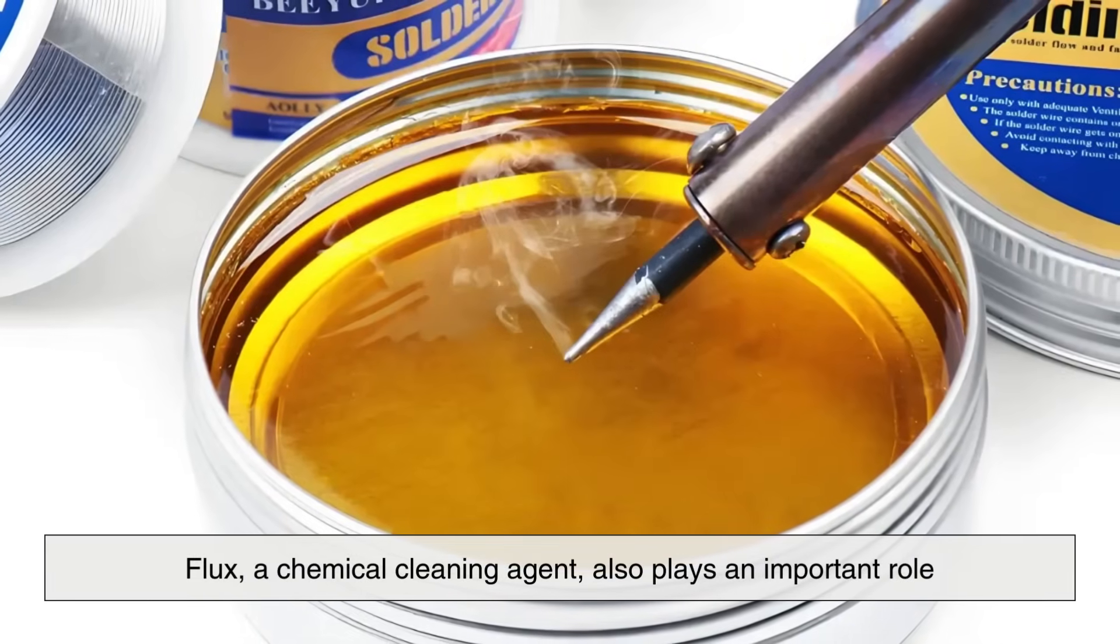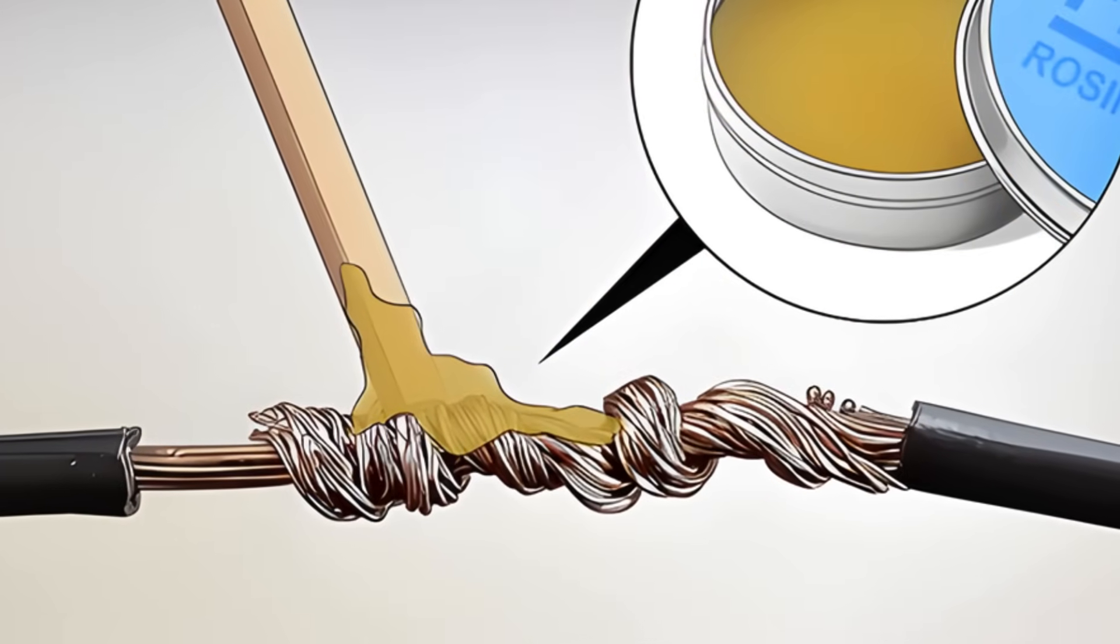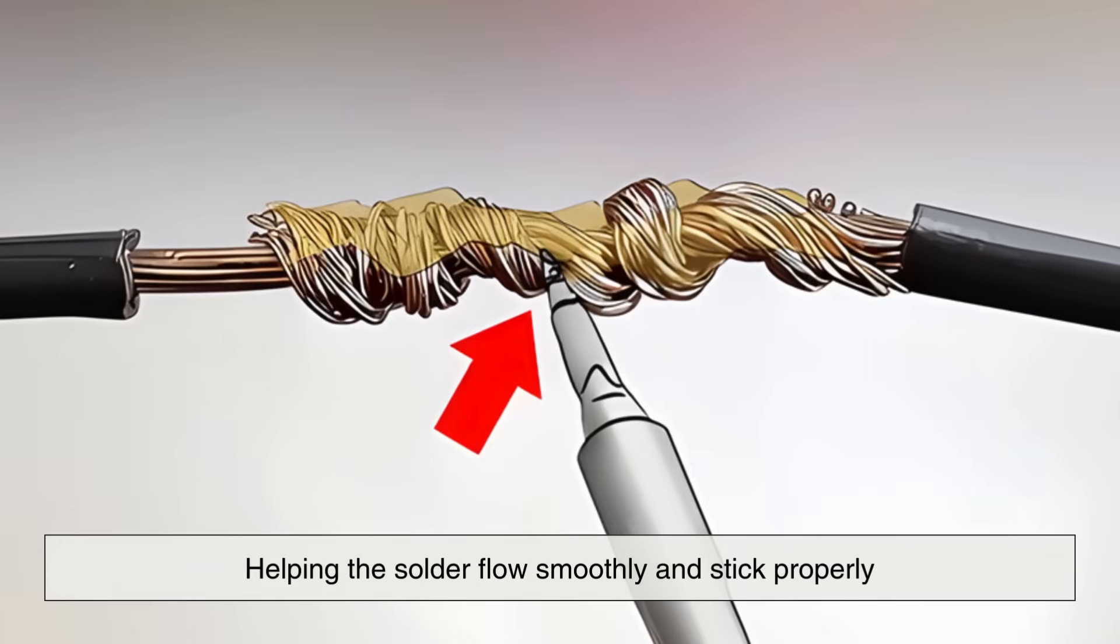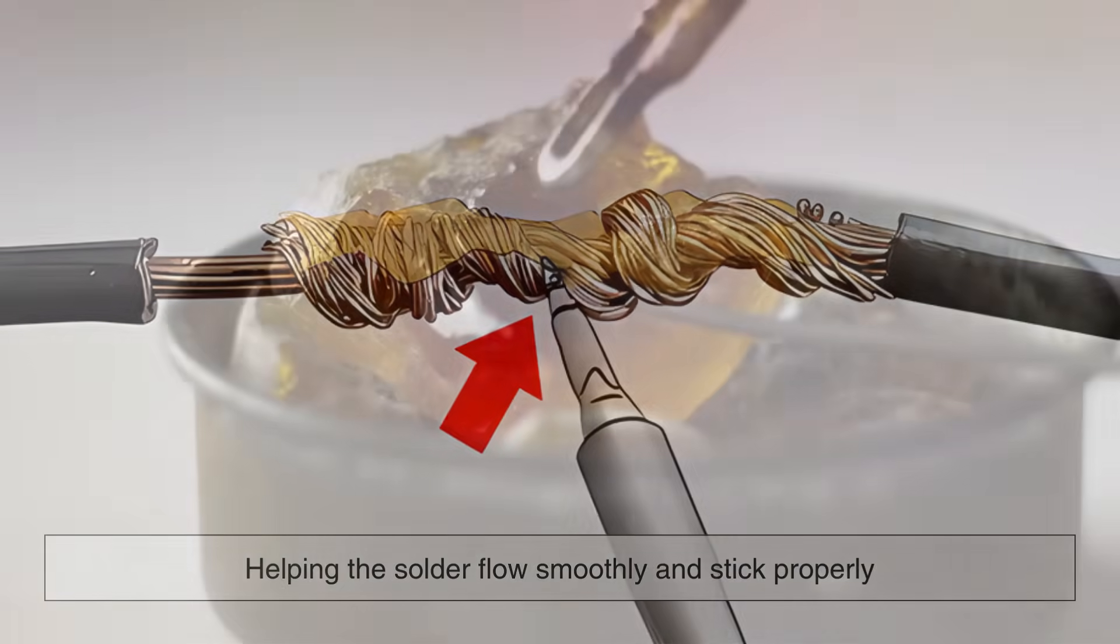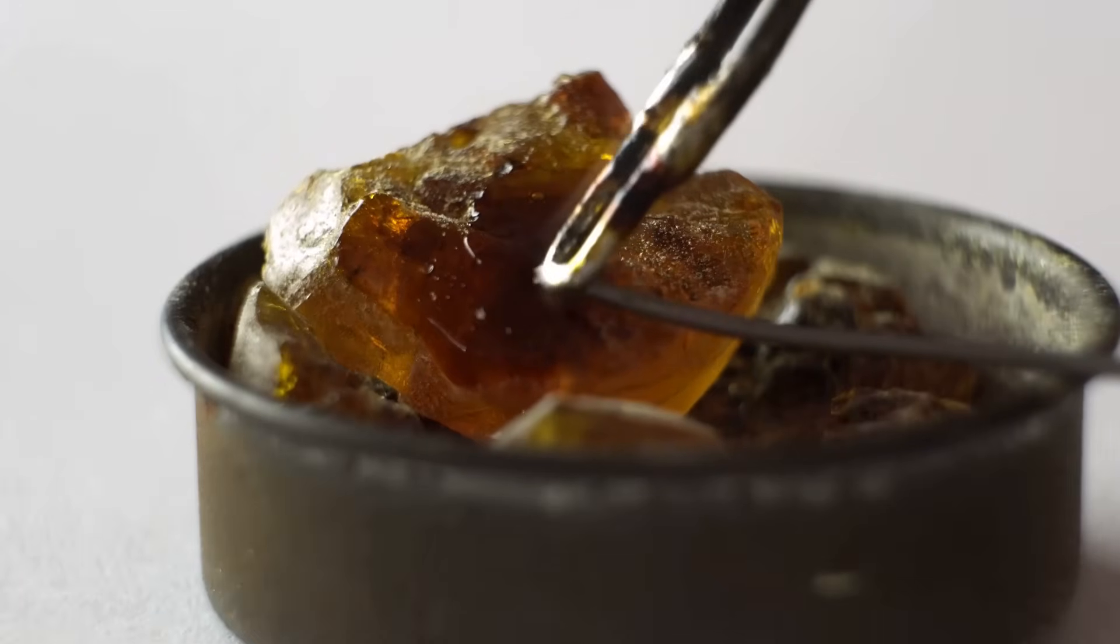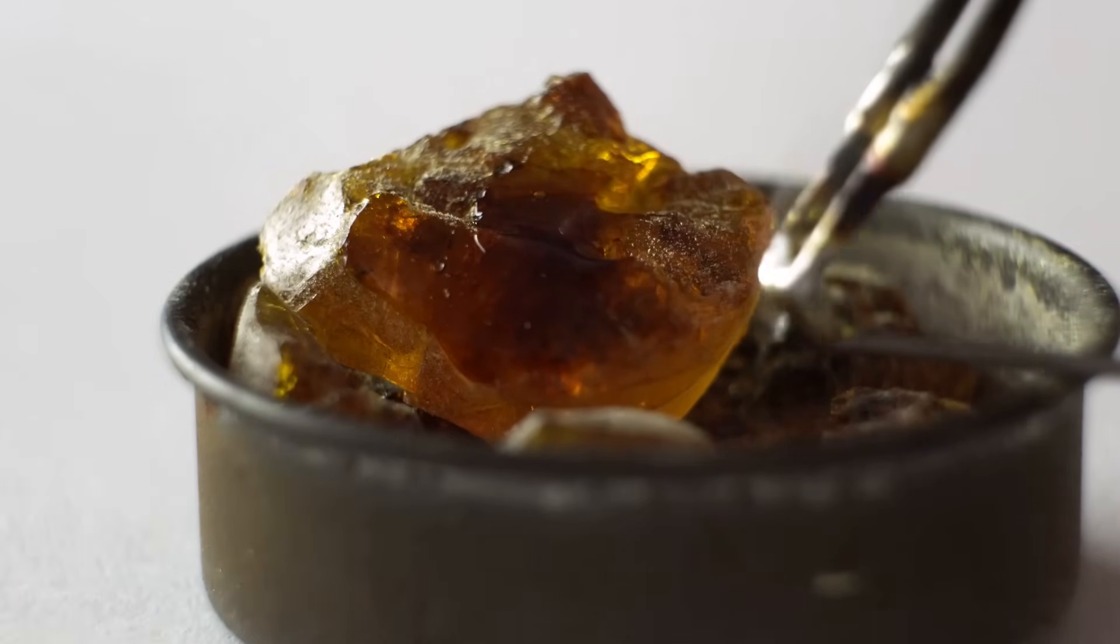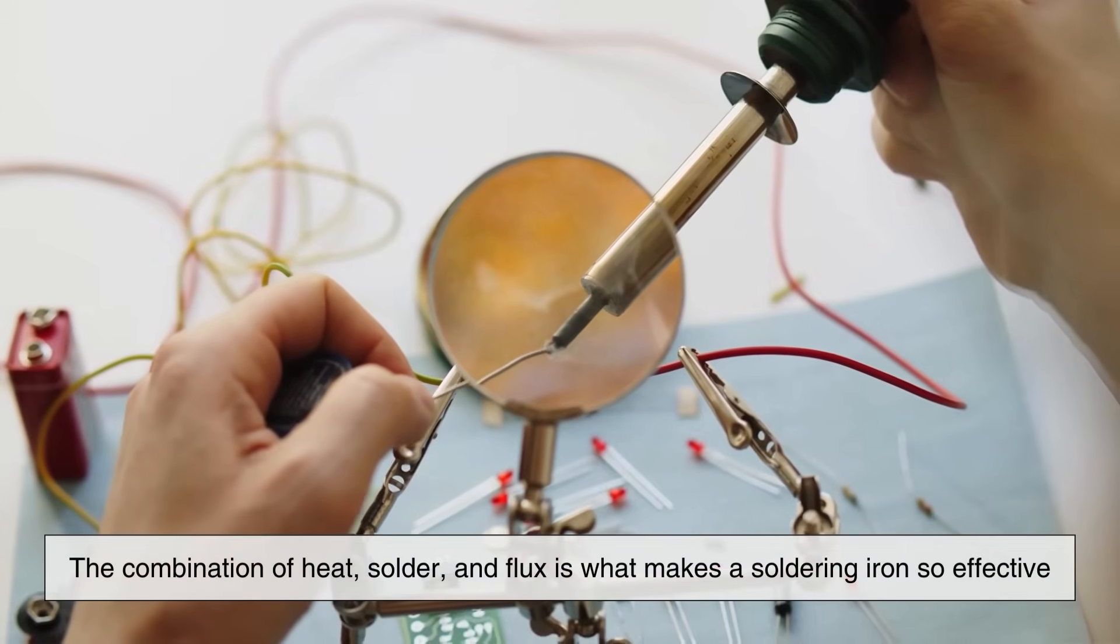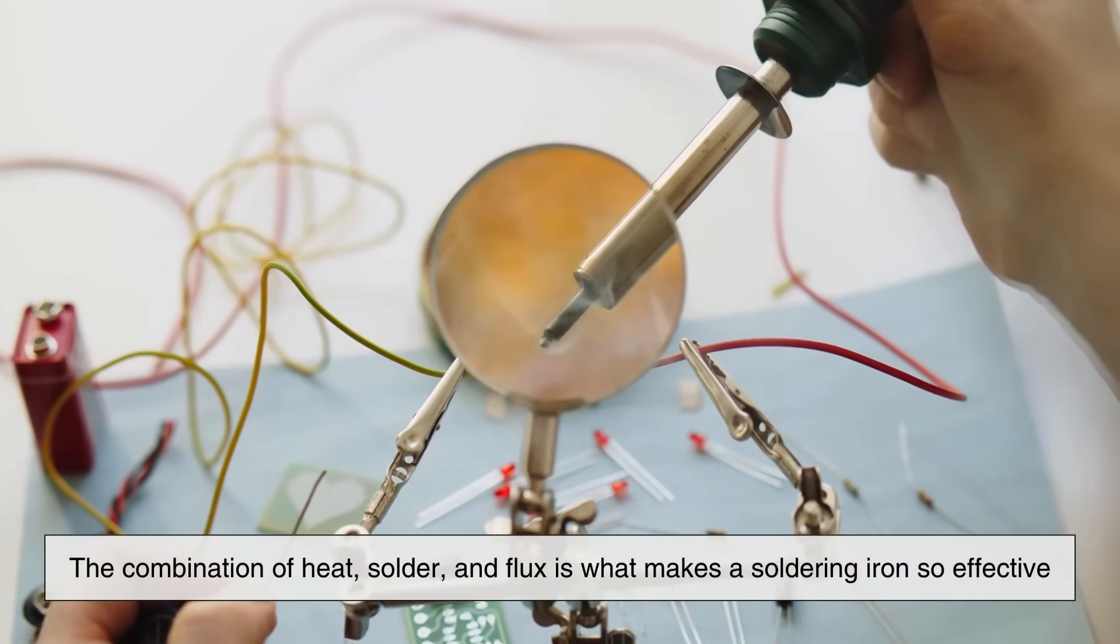Flux, a chemical cleaning agent, also plays an important role. It removes oxidation from the metal, helping the solder flow smoothly and stick properly. Without flux, solder can bead up like water on waxed surfaces, refusing to bond. So the combination of heat, solder, and flux is what makes a soldering iron so effective.